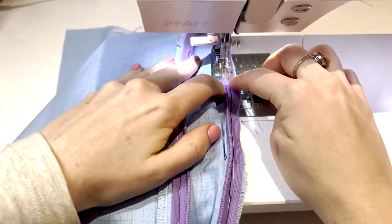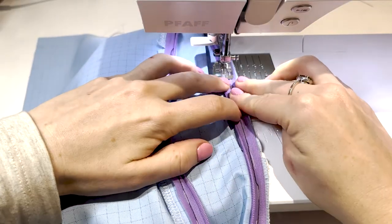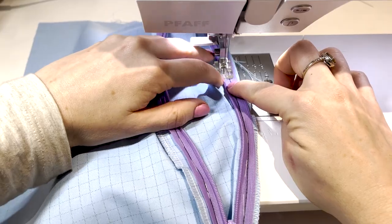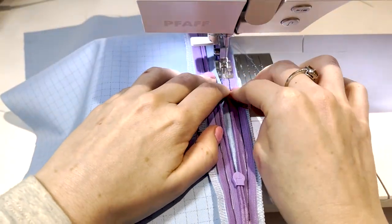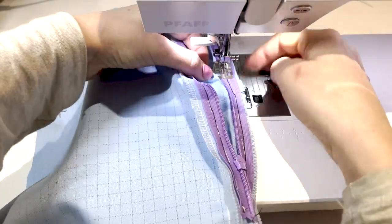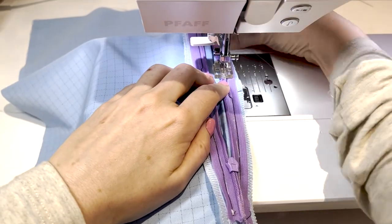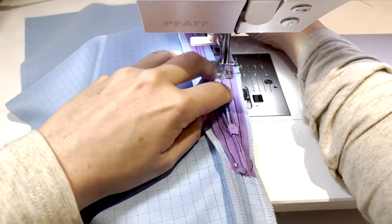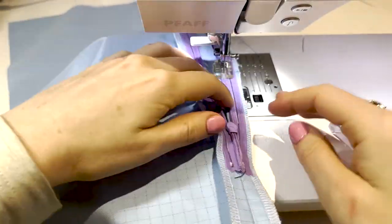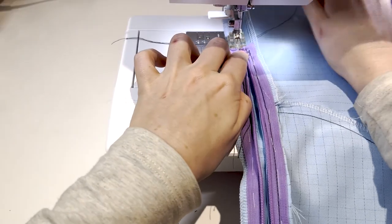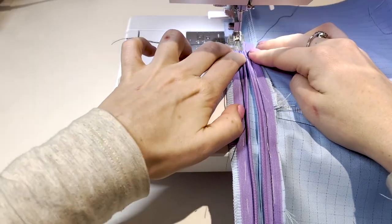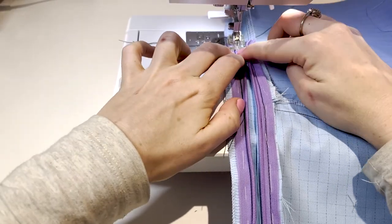If you have not previously installed an invisible zipper, I recommend trying to do this alone without the pocket before trying with a pocket. As previously, leave your needle down to move your zip up and out of the way and then proceed to the bottom. Once this is done, repeat for the other side.